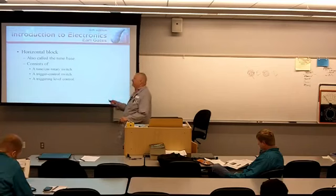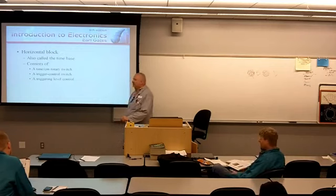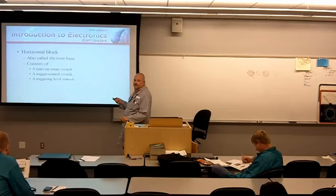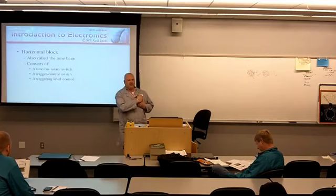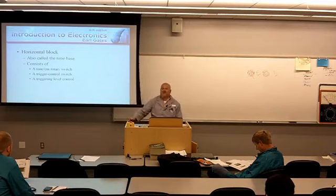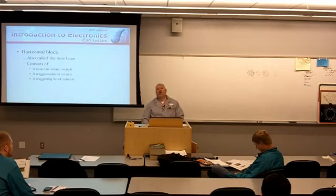The horizontal block is also called the time base, because this is our horizontal information — the electron beam going left to right. It consists of a time per centimeter rotary switch, a trigger control switch, and a trigger level control. When you're operating the oscilloscope, you've got to pay attention to the XYZs — but you also have to pay attention to what's known as triggering.